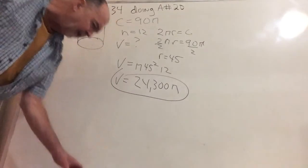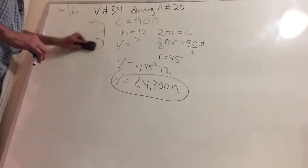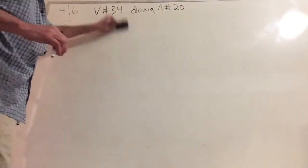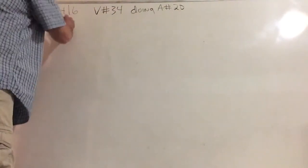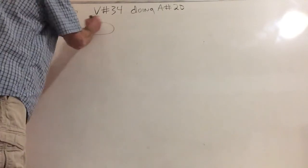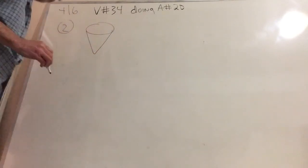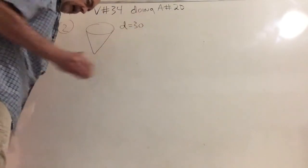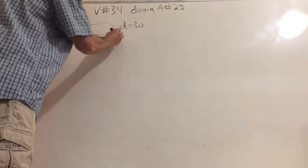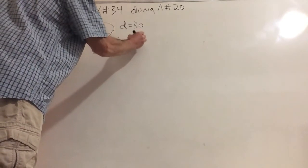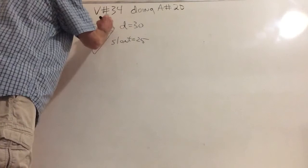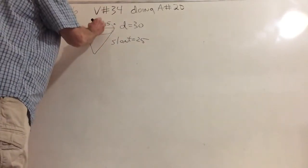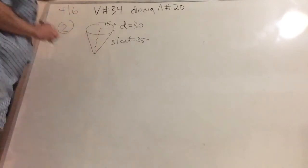All right, we turn our attention immediately to number 2. And again, number 2 is something I've been doing with you for quite a while now. We quickly draw some sort of cone-shaped object, and we say the diameter is 30, and here we say the slant equals 25.